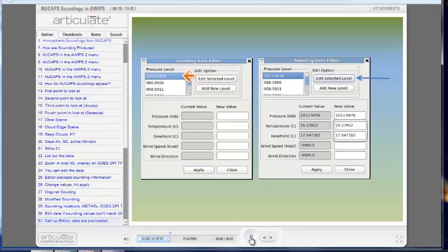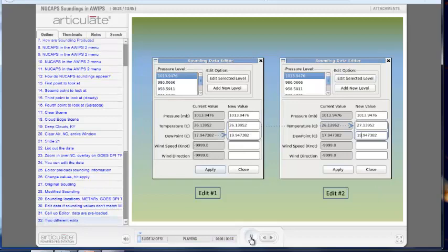The original sounding near Sarasota that we will edit. Highlight the level you want to change. Hit Edit Selected Level, and the current value should pop up. In Edit 1, we've increased the dew point temperature by 2 Celsius. And in Edit 2, we've increased the surface temperature by 1 Celsius. This brings it more in line with the observations as shown in the METARs.